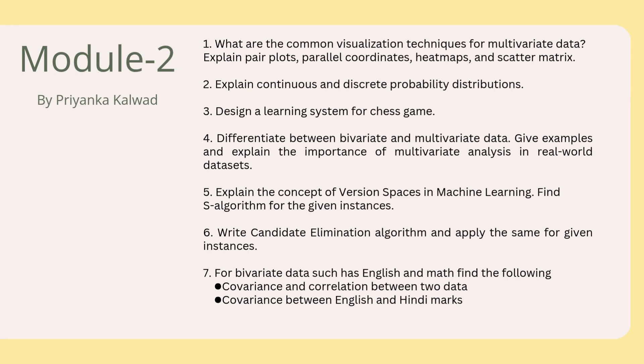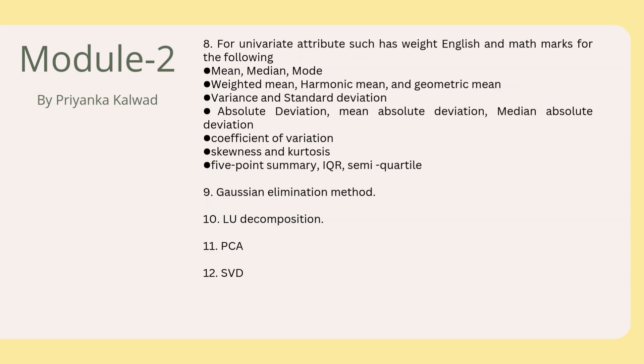10. For bivariate data such as English and math, find the covariance and correlation between two datasets, and covariance between English and Hindi marks. 11. For univariate attributes such as weight, English and math marks, find all the listed measures. 12. Gaussian elimination method. 13. LU decomposition. 14. PCA. 15. SVD.